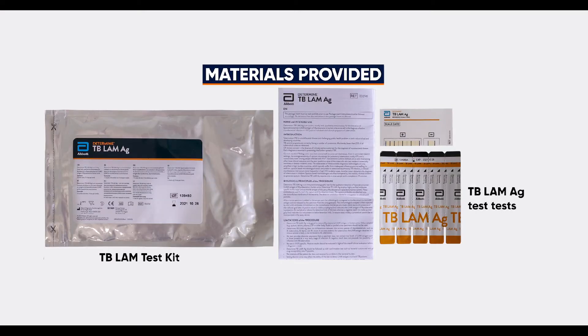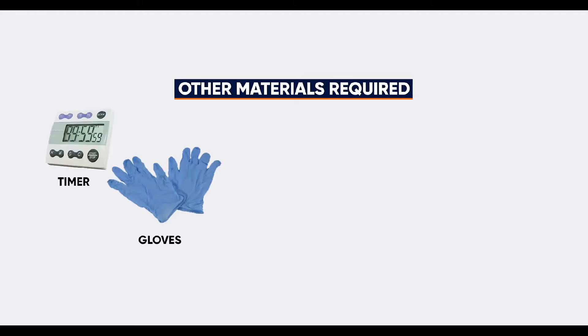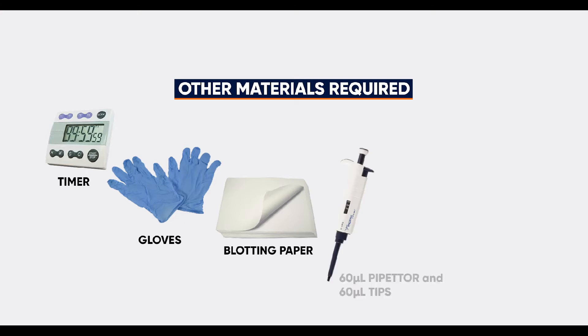The following materials are contained in the TB-LAM testing kit: 25 TB-LAM antigen tests — five cards each holding five test strips — one TB-LAM antigen reference card, and one Determined TB-LAM antigen instructions for use. In addition, the following materials are required but not provided in the kit: timer, gloves, blotting paper, 60-microliter pipette and 60-microliter tips. Disposable pipettes of similar volumes can replace these, as well as a pen and sharp permanent marker.